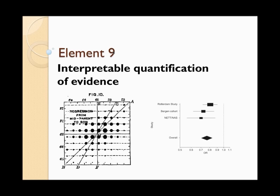Element nine is interpretable quantification of evidence. Quantifying evidence is one of the chief aims of statistics, and uncertainty can be expressed in terms of p-values, confidence intervals, or posterior probabilities. This may be difficult in the setting of multiple hypothesis testing, such as in genomic studies with thousands of tests. It's also difficult in the context of subgroup analyses, where p-values of interactions can be very misleading and have dire consequences.